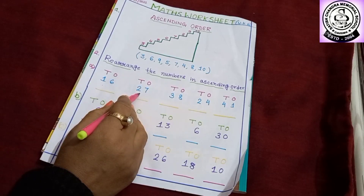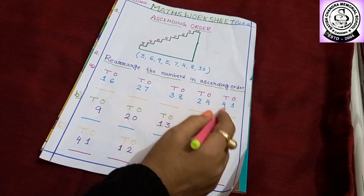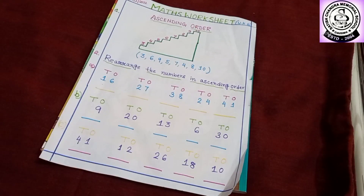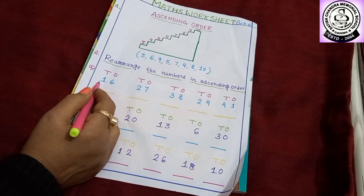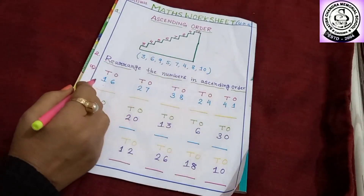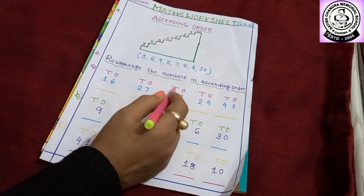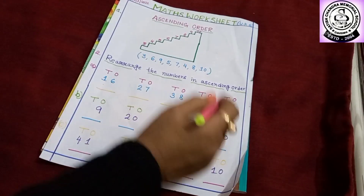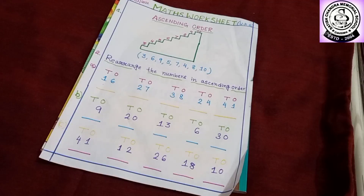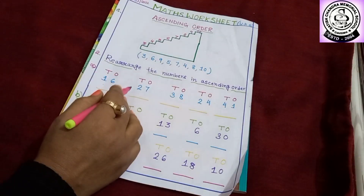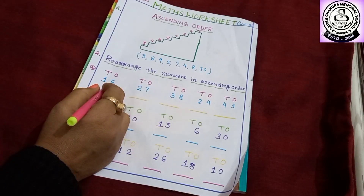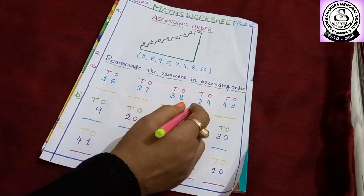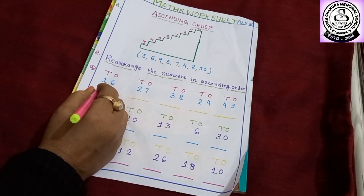I have written 16, 27, 38, 24, and 41. How will you rearrange the numbers? First, you have to identify and observe carefully the tens place numbers. Here 1, then 2, 3, again 2, and here 4. Which one is the smallest number? 1 is smaller than 2, 3, and 4 also. So, 16 is smaller than 27, 38, 24, and 41. So, now I am going to write here 16.